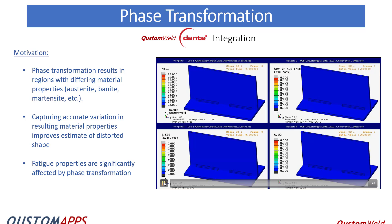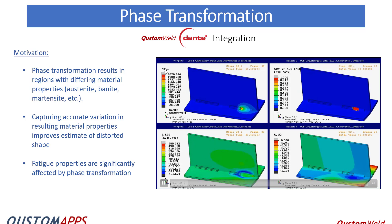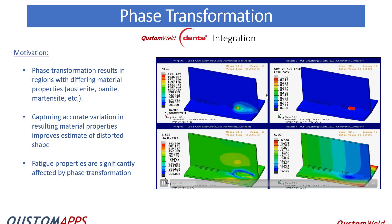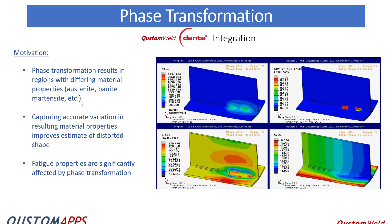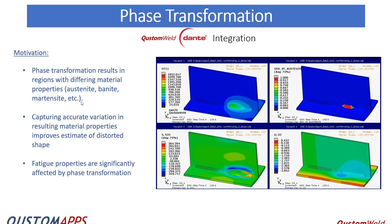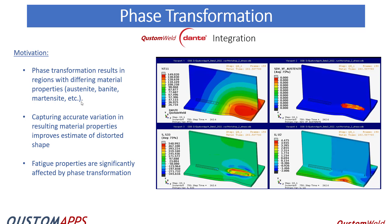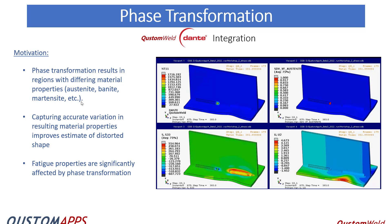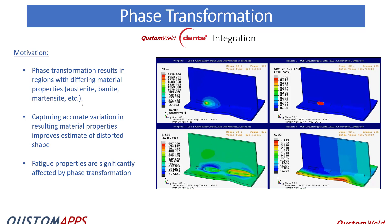So here's just an example, a small test case showing in this case the temperatures and here stresses, here are the austenite compositions and displacement. So phase transformations results in the region with different materials so we can get the austenite, bainite, martensite, upper bainite, ferrite, all of those different variations. And capture accurate variations resulting in the material properties of this distorted shape and it's very important when you're talking about doing fatigue calculations to know what the phase transformation has been.